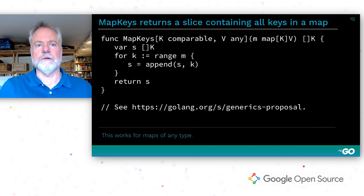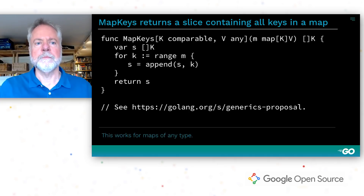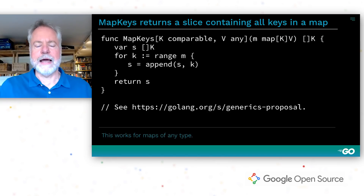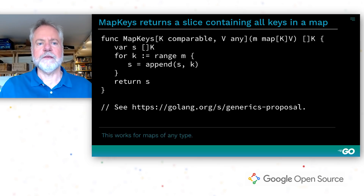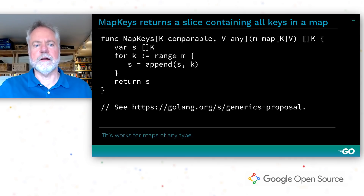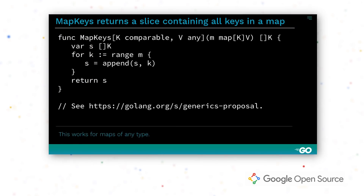With type parameters, you can write this function once in a way that works for all map types and is fully type checked by the compiler. The type parameters are named k and v. The ordinary parameter m, which used to have type map string int, now has type map k v. The type parameter k is the key type of the map, so it has to be comparable — expressed using the pre-declared constraint comparable. The type parameter v can be any type, so its constraint is the pre-declared constraint any. The body of the function is just like before, except the variable s is now type slice of k rather than type slice of string.